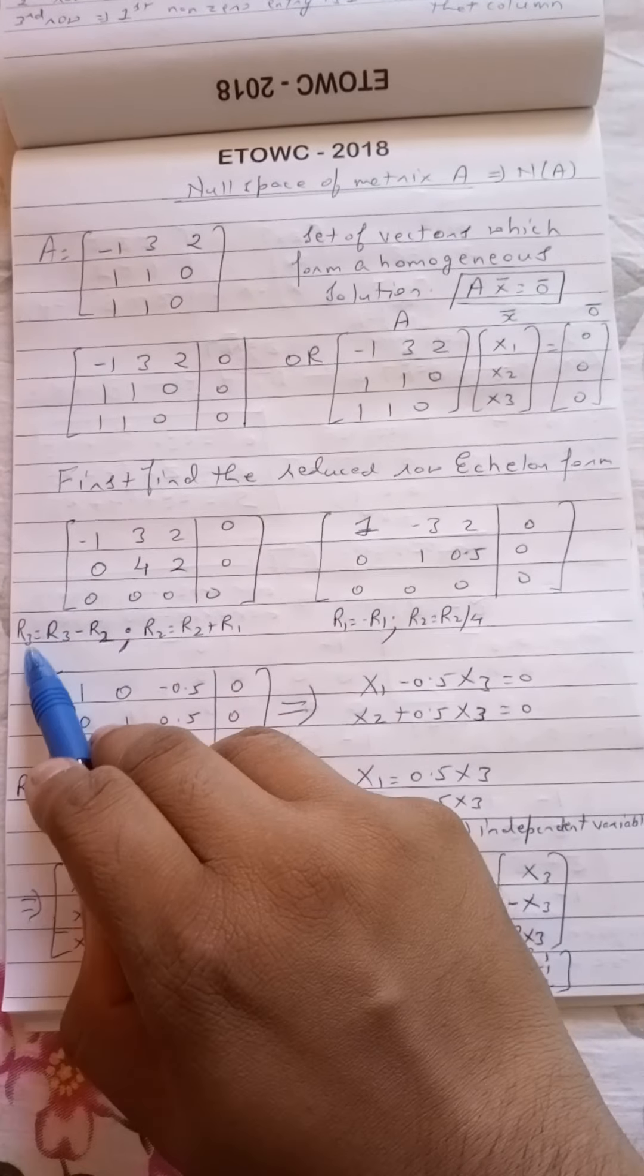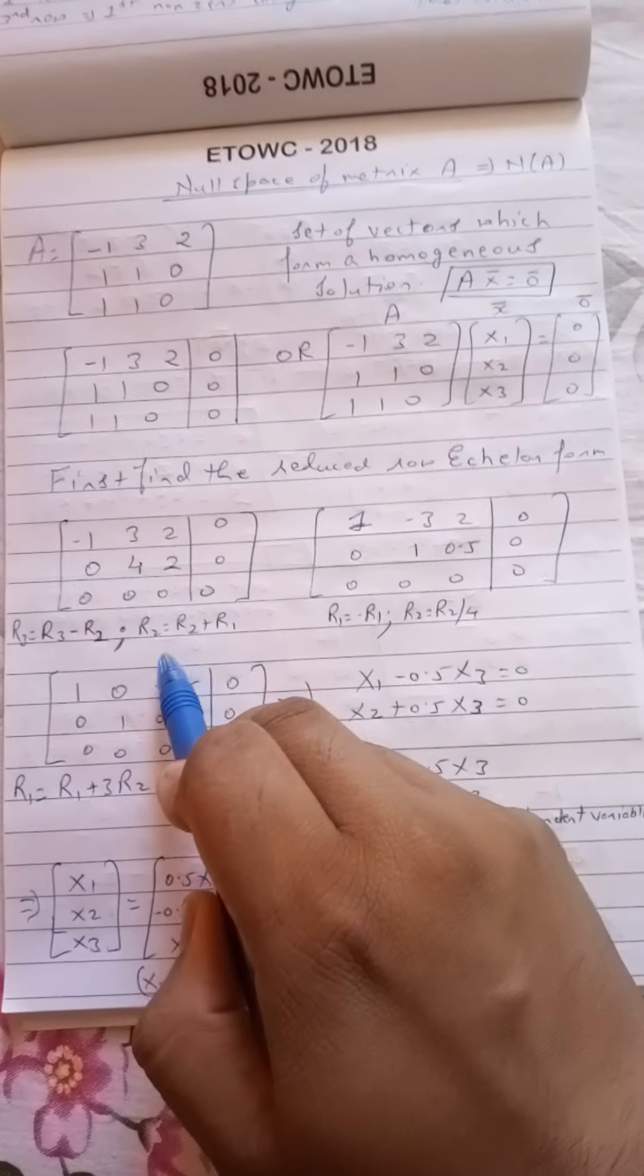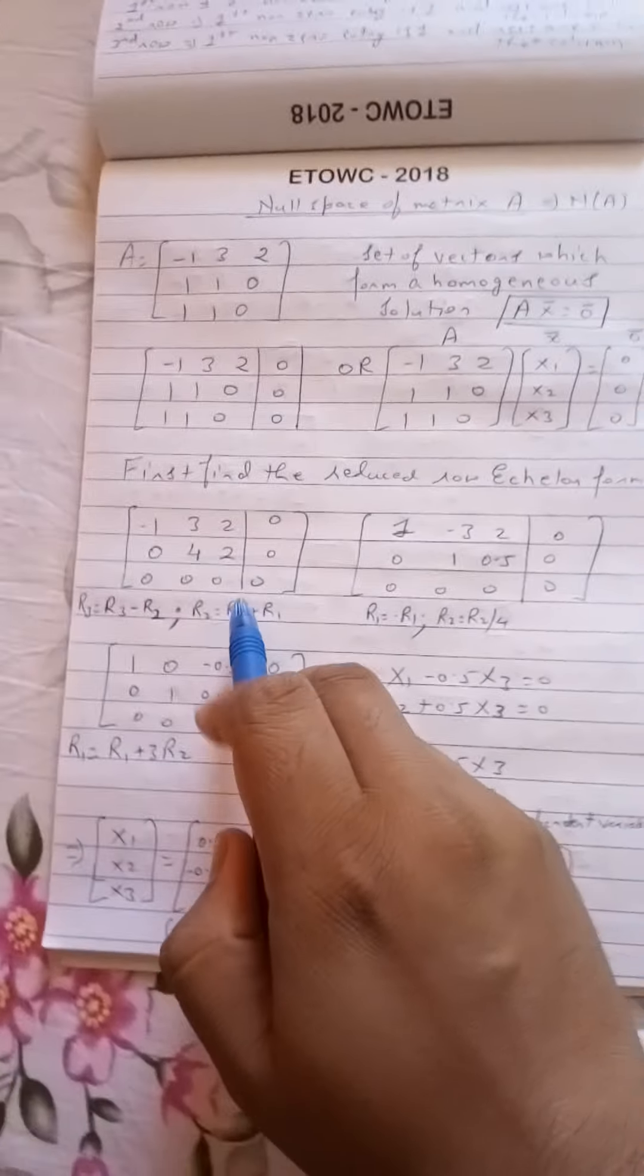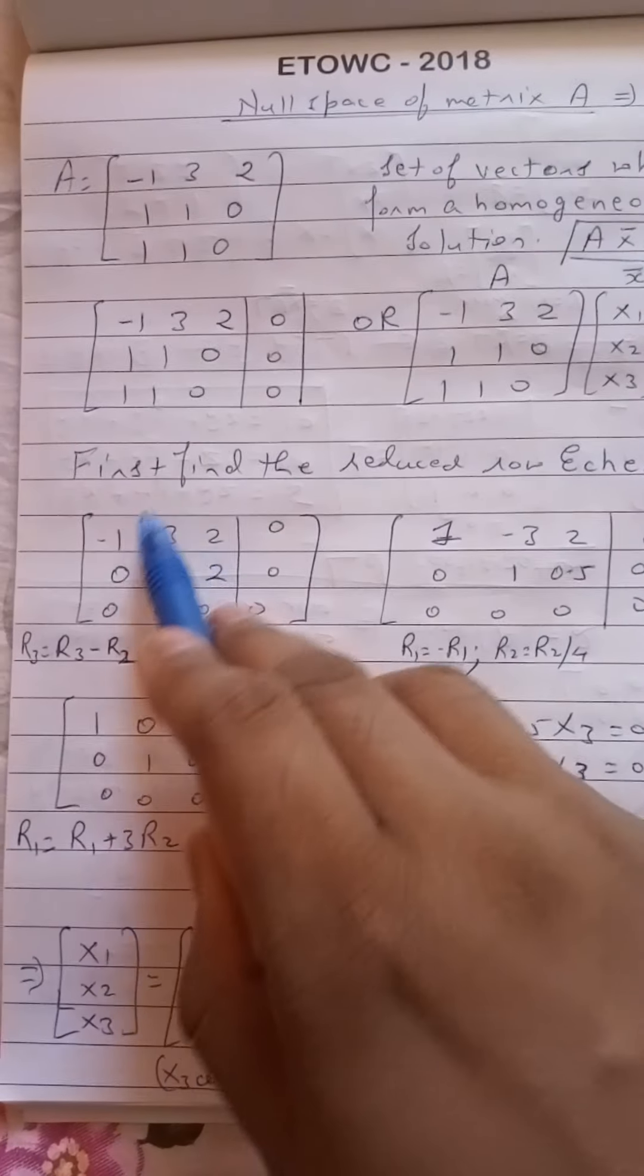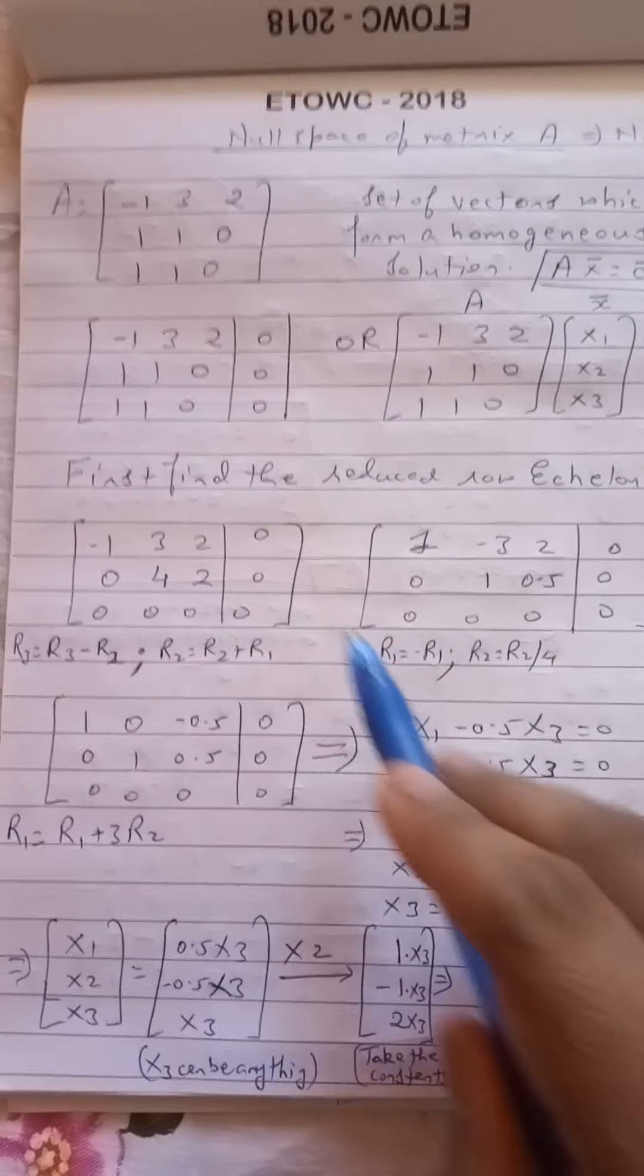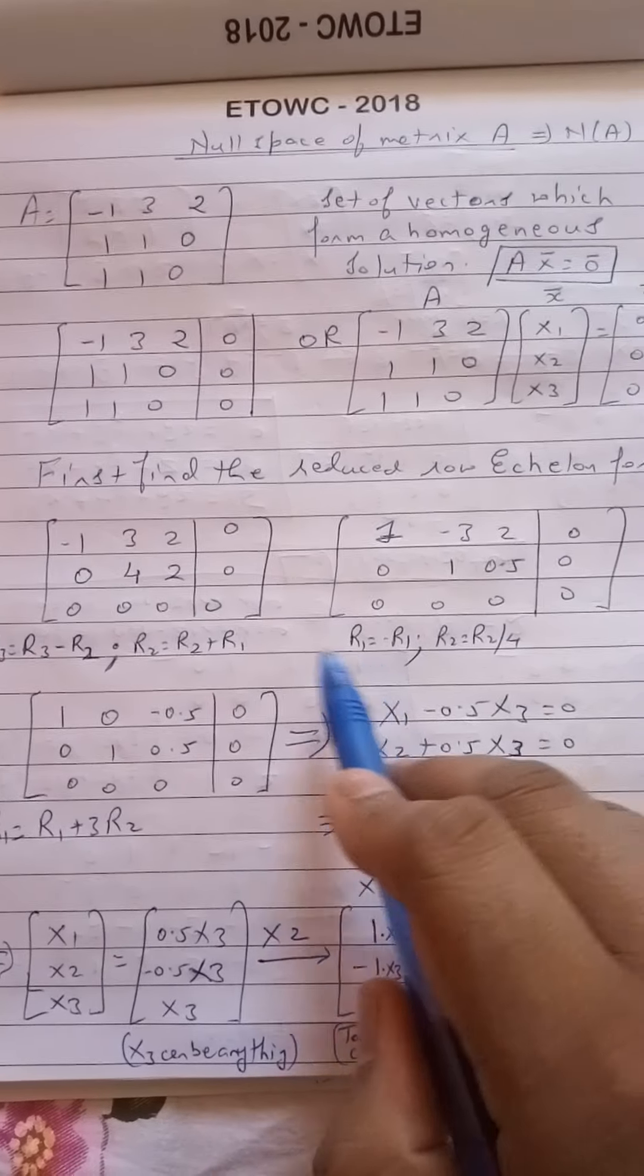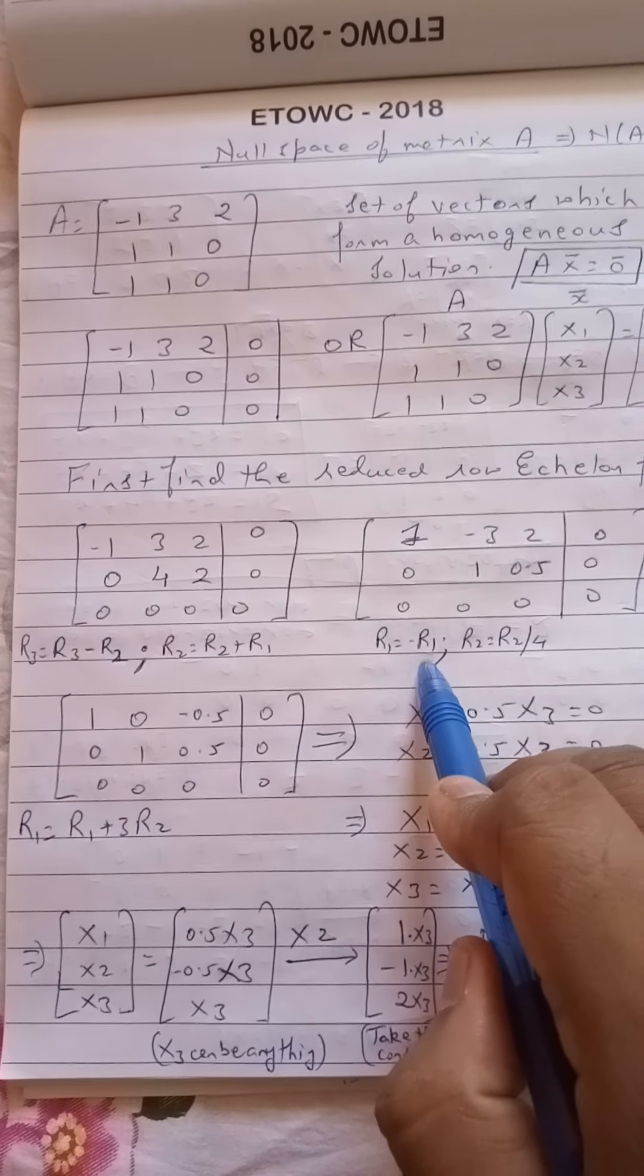So first we find the reduced row echelon form. To find the reduced row echelon form we do R3 equal to R3 minus R2 and R2 equal to R2 plus R1. And once you do that you get the matrix like this.